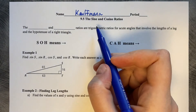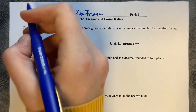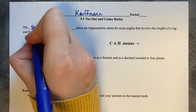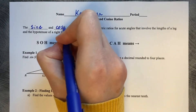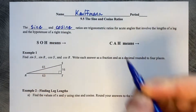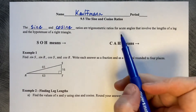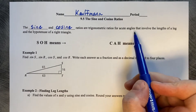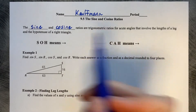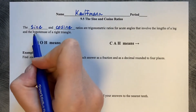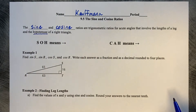9.5 — the sine and cosine ratios. The sine and the cosine ratios are trigonometric ratios for acute angles that involve the lengths of a leg and the hypotenuse of a right triangle.